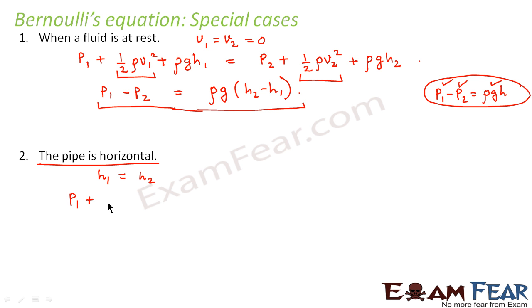So we can say the equation P1 plus half rho V1 squared plus rho g h1 equals P2 plus half rho V2 squared plus rho g h2. So in this case, H1 and H2 will become equal. So if H1 and H2 are equal, these two terms will cancel out.